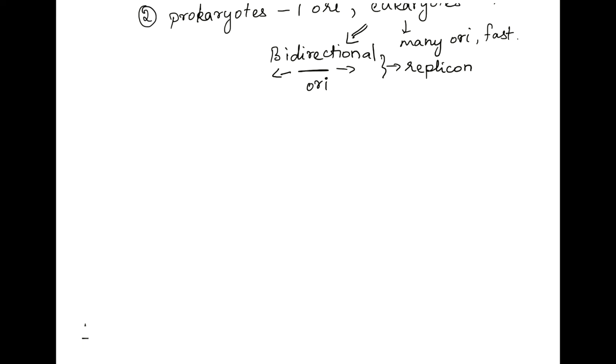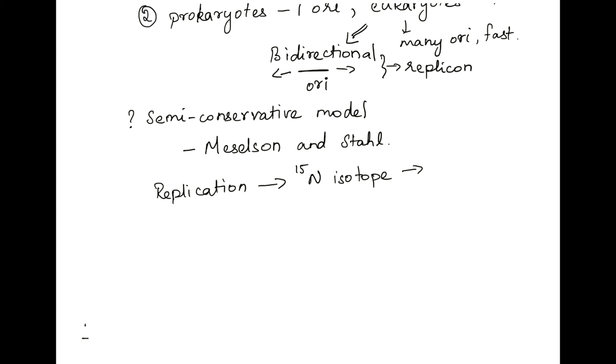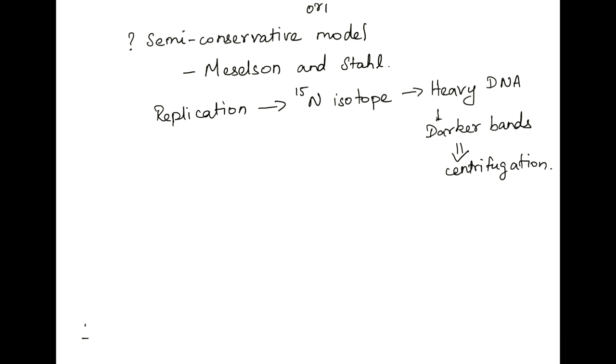Now we know that DNA replication is a semi-conservative model. How DNA replication is a semi-conservative model was proved by a series of experiments conducted by Meselson and Stahl. Meselson and Stahl, what they did is they replicated DNA in a medium having N15 or an isotope basis. This resulted in heavy DNA, and this heavy DNA formed darker bands or heavy bands during centrifugation. Later, they subjected this heavy DNA, N15 band forming DNA, to first round of replication.